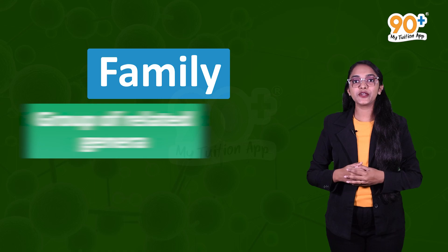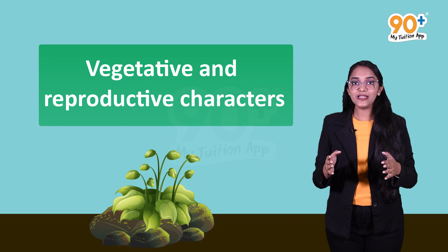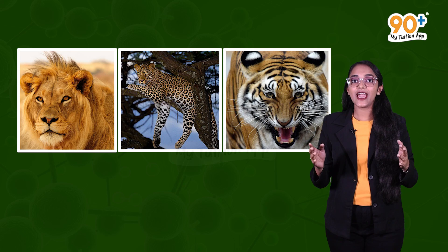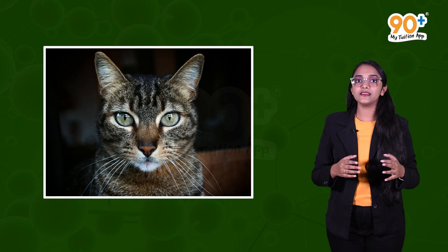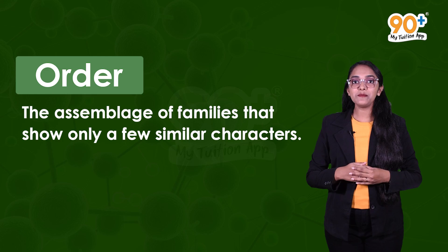The next category is family — a group of related genera with fewer similarities compared to genus and species. In plants, families are categorized on the basis of vegetative and reproductive characters. For example, lion, leopard, and tiger belong to a single genus, while cats belong to another genus, but together they all belong to the same family Felidae.